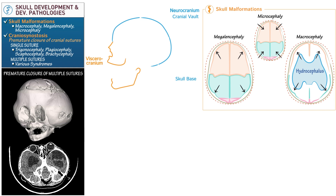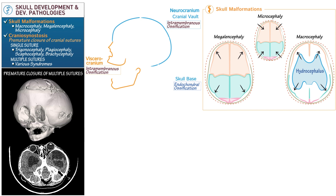Regarding skull development, the majority — the cranial vault and viscerocranium — develop via intramembranous ossification, which has no intermediate cartilaginous model. The skull base, however, develops via endochondral ossification, which proceeds through a cartilaginous matrix.